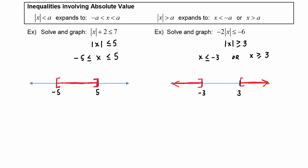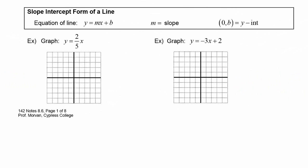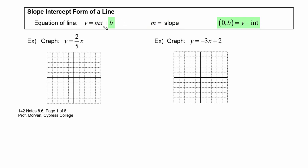Here is a quick reminder about the slope-intercept form of a line. The equation will look like y equals mx plus b, where m is the slope — the coefficient of the x term — and the constant term b helps us find the y-intercept, which will be the point (0, b).